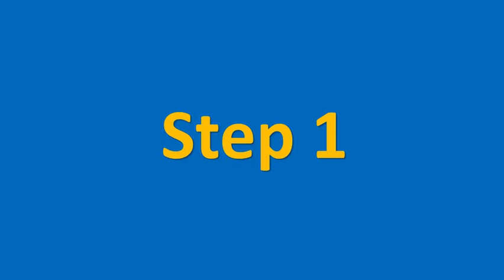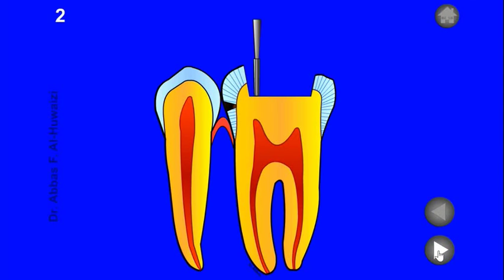Step 1: Place the Fissure Burr at the pulpal floor of the Class 1 cavity, then move the burr towards the carious side.